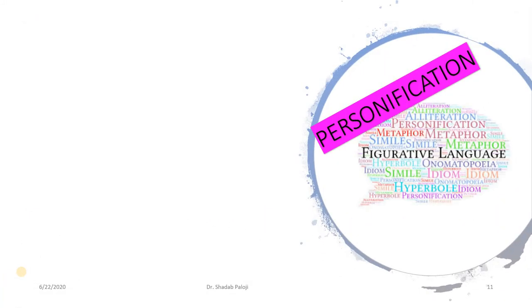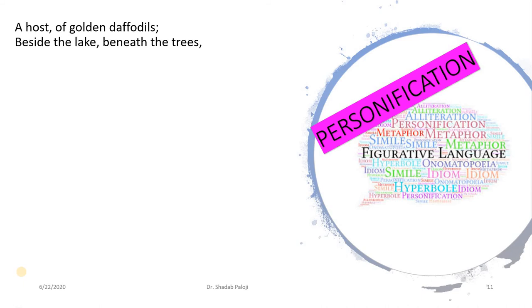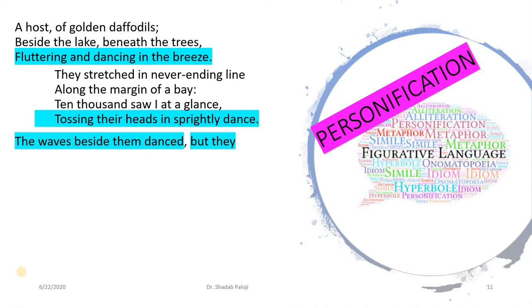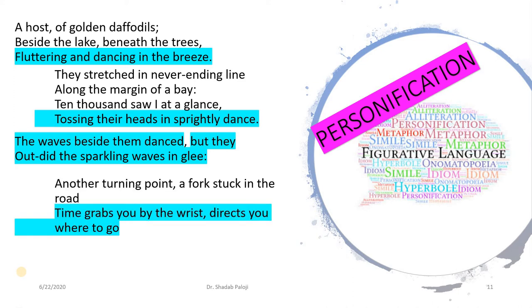After metaphor, we come to personification. 'A host of golden daffodils, beside the lake, beneath the trees, fluttering and dancing in the breeze. They stretched in never-ending line along the margin of a wave. Ten thousand saw I at a glance, tossing their heads in sprightly dance. The waves beside them danced, but they outdid the sparkling waves in glee.' And from Green Day's Good Riddance: 'Another turning point, a fork stuck in the road. Time grabs you by the wrist and directs you where to go.'